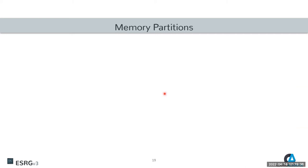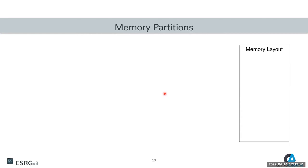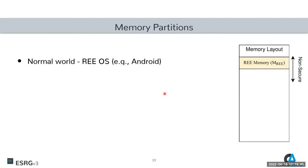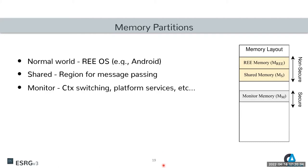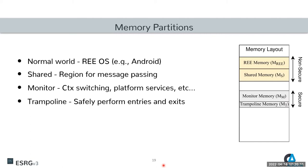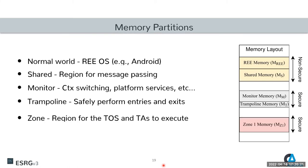Looking at the memory layout, the first memory region is the normal world memory, which hosts the rich environment OS such as Android, along with shared memory used to communicate with the TEE zone. In the secure world, we have the monitor, the same as in a typical TrustZone deployment. But now we also need a special zone for the Trampoline, whose main function is to safely perform entries and exits to and from the zone. Finally, we need a memory region to host the zone, which hosts the trusted OS and its trusted applications.